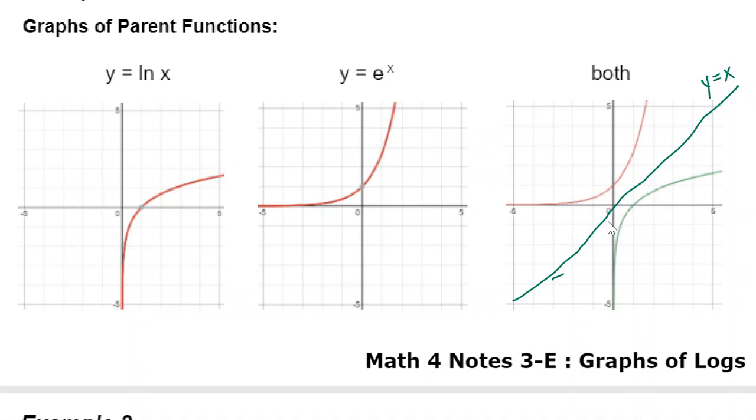This is the line y equals x. And we've noticed that when things reflect across it, x and y have a tendency to change places. There are some that would say that is how we define an inverse. Basically, logs and exponentials are inverse of each other, just the way that adding and subtracting are opposites, multiplying and dividing are opposites. Logs and exponentials are inverse of each other, and that's something that can be helpful to remember.